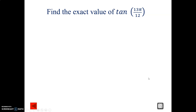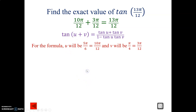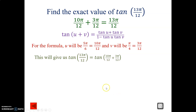One more: find the exact value of tan thirteen pi over twelve. Using the three strategy, ten and three make thirteen, giving us ten pi over twelve plus three pi over twelve. We'll be using the sum version of the identity. U will be five pi over six (ten pi over twelve reduced) and V is pi over four (three pi over twelve reduced). So thirteen pi over twelve expands to ten pi over twelve plus three pi over twelve.